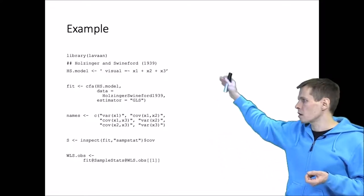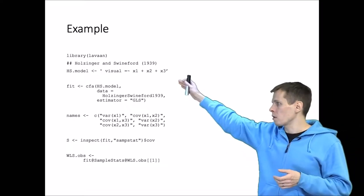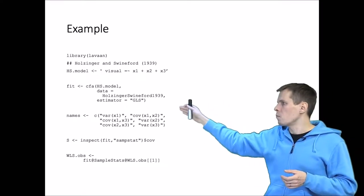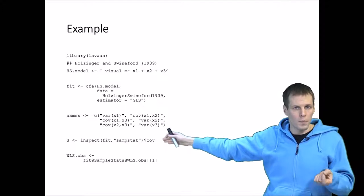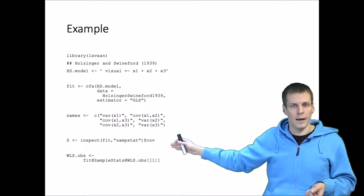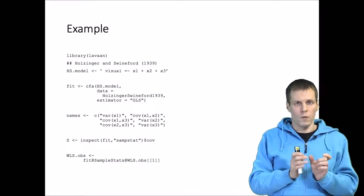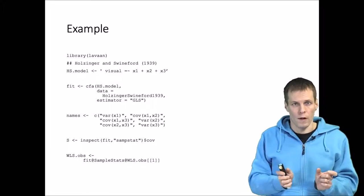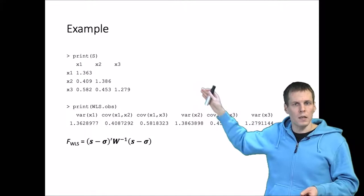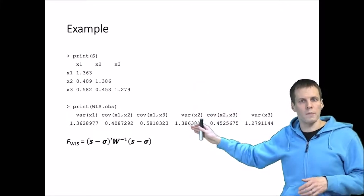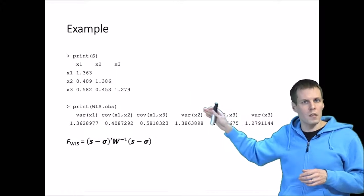Let's take a look at what these estimation techniques actually do and what the different equations mean — and we'll need some data. I'll be using this R code, which shows a single factor model with three indicators fitted using different techniques. S contains the sample covariances of the data, and WLS.ops contains the vector of the observed variances and covariances. The S matrix is our sample covariance matrix and the WLS vector is basically just the same information arranged differently — instead of a matrix, you have a vector.